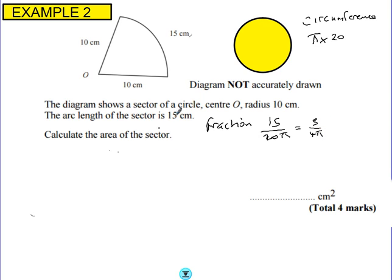The area of the full circle would be π times 10 squared. And we've got this fraction of that circle. So we've got to times that by 3 over 4π. So you put that in your calculator, you will get 75.002 and so on.